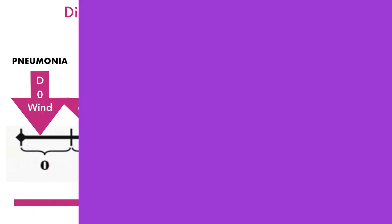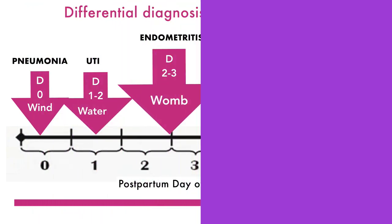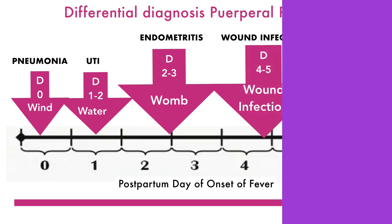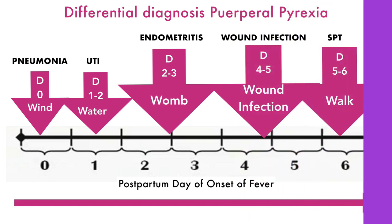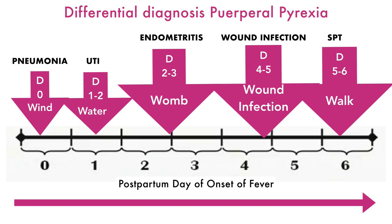This diagram from my textbook Modern Obstetrics illustrates how, from the postpartum day that the fever starts, one can decipher the cause. If it arises on the first day after delivery, it is because of pneumonia. If the fever comes on day two, it is because of pyelonephritis. Fever on the third day is because of endometritis. Fever on day four or five could be because of wound infection. Fever arising on day five or six could be because of septic pelvic thrombophlebitis or pelvic abscess.